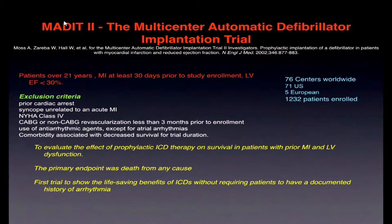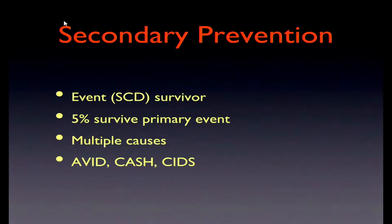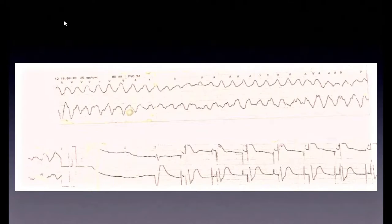You've all seen TV shows where patients are rushed to the ER, everyone says 'clear,' they get shocked, and they're alive. In the real world, only 5 percent of patients who have a sudden cardiac arrest make it to hospital. Our job is to identify at-risk patients so their lives can be saved before they reach hospital. This is an actual recording from an implantable device showing ventricular fibrillation — the device delivers a shock and the patient returns to paced rhythm, much more organized.